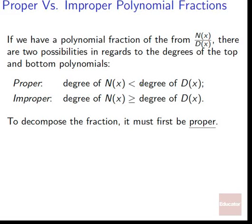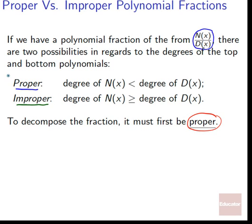Let's get to actually figuring out how to do this. If we have a polynomial fraction — numerator polynomial divided by denominator polynomial — there are two possibilities regarding the degrees of the top and bottom polynomials. We call them proper and improper. Proper is when the degree of the numerator polynomial is less than the degree of the denominator polynomial. To decompose the fraction, it must be proper.